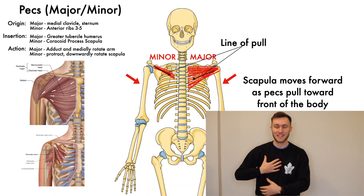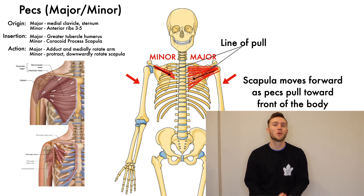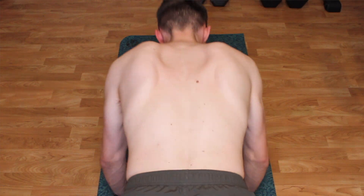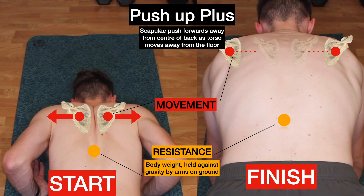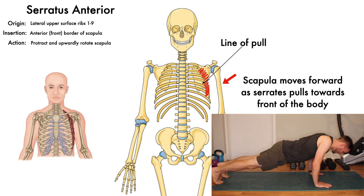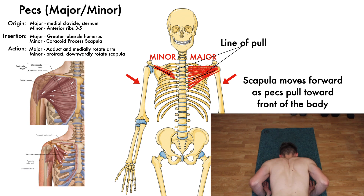Scapular protraction's main muscles are the pecs and the serratus. So since we're talking about the muscles of the chest and the serratus which pulls the shoulder blades forward, an exercise that targets this motion is going to involve pushing towards the front. The pushup plus is an example of this. A pushup on its own will already incorporate scapular protraction as the shoulder blades move away from the spine, but the plus added on to the end targets the serratus and scapular protraction movement even more, by pushing the chest further away from the ground while maintaining straight elbows.